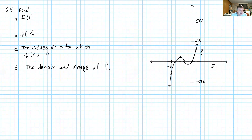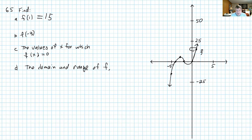Problem 29. Find f of 1. But look here — the scale is different. On the x axis each square is 1 unit, but on the y axis each square is 5 units, so you have to be careful. When x is 1, y is 15. F of negative 3 would be right here, so y is 1. The values of x for which f of x equals 0: y is zero when x is negative 4, negative 2, and zero.